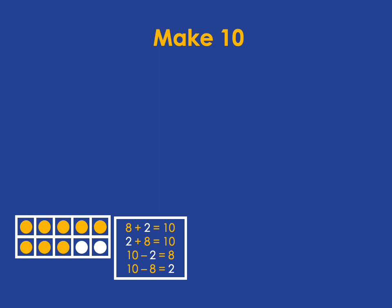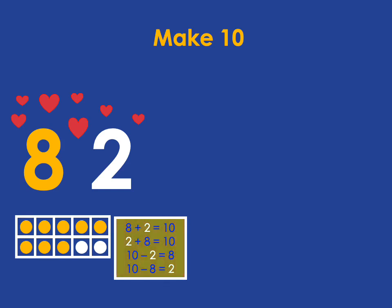Once we know that 8 and 2 are the happy number pair that go together to make 10, we can easily and quickly get all these facts over here. We know that 8 plus 2 is 10, 2 plus 8 is 10, 10 minus 2 is 8, and 10 minus 8 is 2.